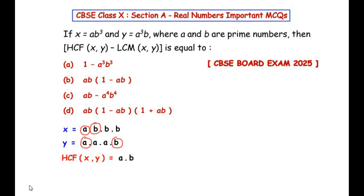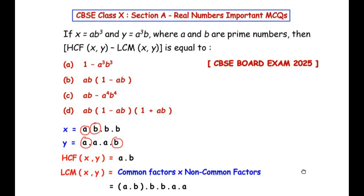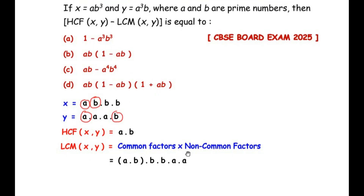Now let us find out the LCM. The LCM can be written as common factors times non-common factors. The common factors are the ones we got for the HCF, that is a times b. The non-common factors are the ones which we have not circled — that is b times b from x, and a times a from y.